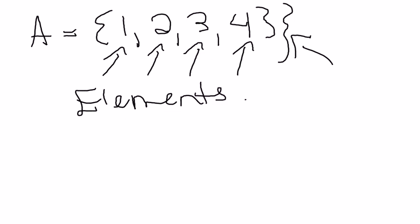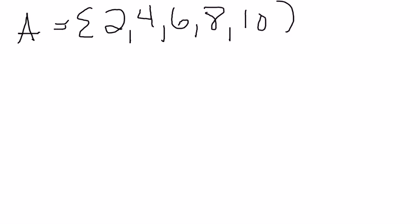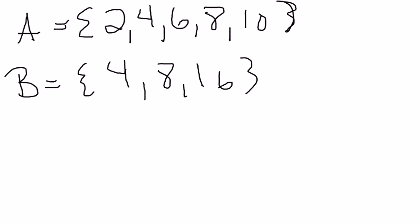Now we use union and intersection when we start to compare sets. So in order to compare sets we actually have to have more than one. So let's look at the example: A is 2, 4, 6, 8, and 10. Whereas B is going to be 4, 8, and 16.